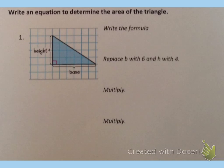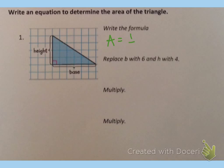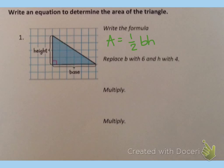Write an equation to determine the area of the triangle. The first thing we have to do is write the formula, and the formula to find the area of a triangle is A equals one-half BH — area equals one-half times the base times the height. Now we can plug in and solve, but as I look at this triangle, I see it tells us where the base is and where the height is, but it doesn't tell us the value for the base or the height, so we have to figure this out on our own.